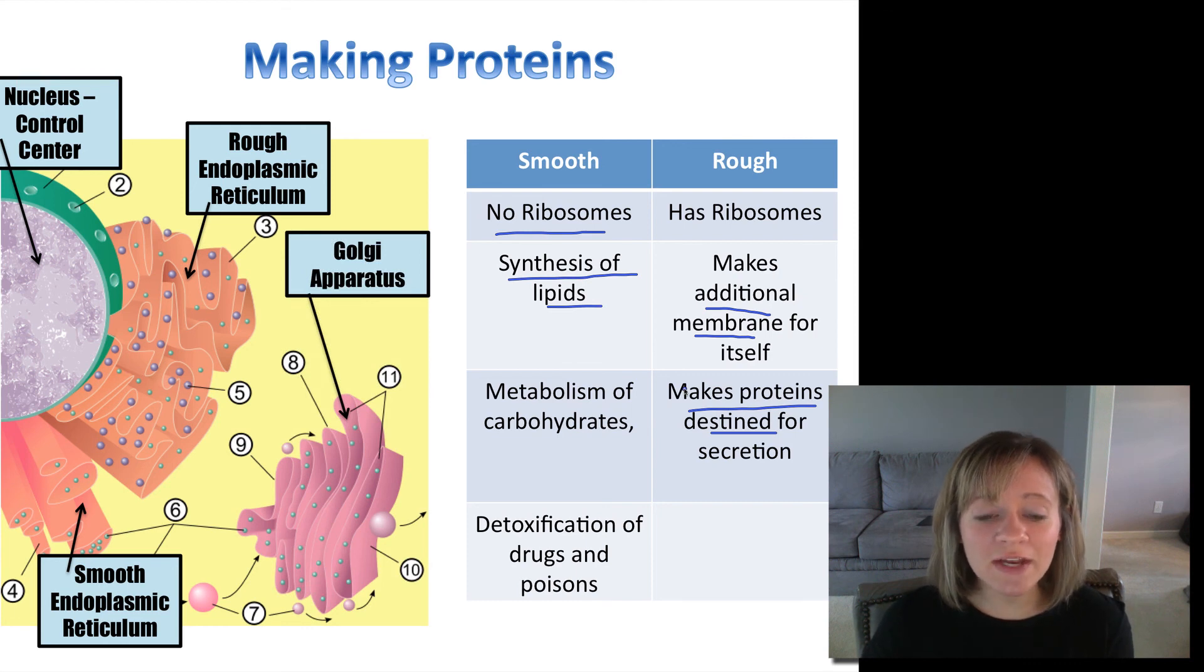And the next thing we'll look at starting the next video is the Golgi apparatus. So the rough ER is going to make all sorts of proteins and then it's going to ship the proteins to the Golgi apparatus for the Golgi to do its job. So we'll take a look at that in the next video.